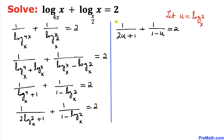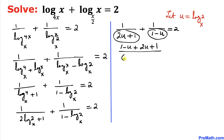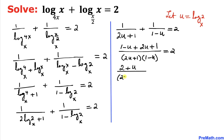Adding the two fractions using the criss-cross method: the numerator becomes (1 minus u) plus (2u plus 1), which simplifies to 2 plus u. The denominator is (2u plus 1) times (1 minus u). So we have (2 plus u) divided by [(2u+1)(1−u)] equals 2.